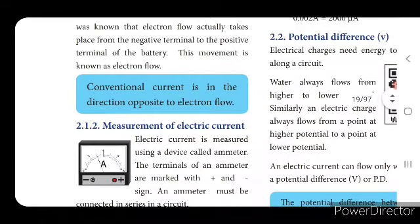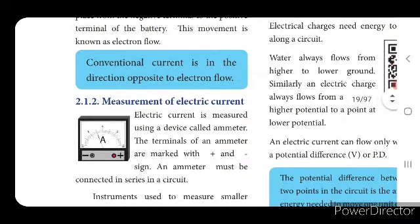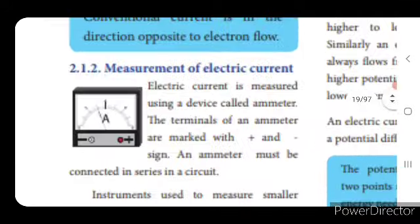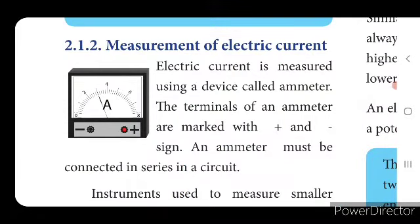We have to measure electric current. The device used to measure electric current is an ammeter. The diagram for the ammeter is given — it also has a positive terminal and a negative terminal. In whichever circuit we want to measure the electric current, the positive terminal should be connected to the ammeter. The terminals of an ammeter are marked with positive and negative signs, and the ammeter must be connected in series in a circuit.